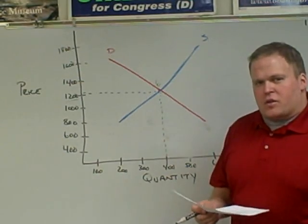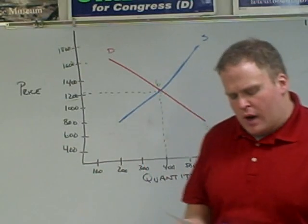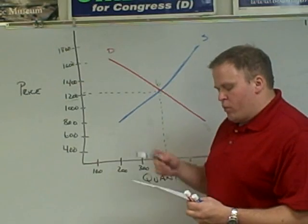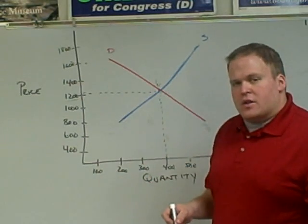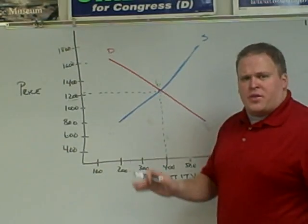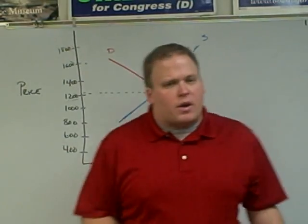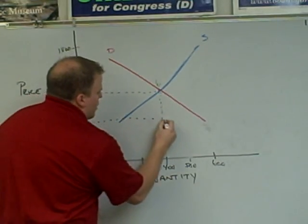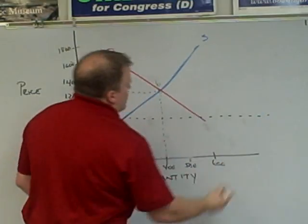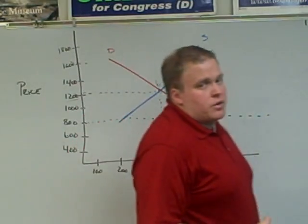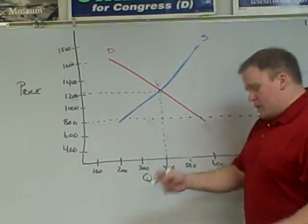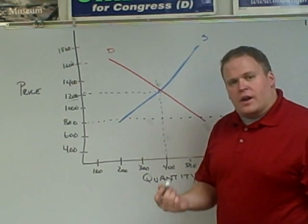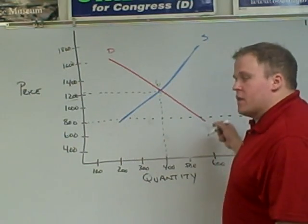Question four covers price ceilings and price floors — this is where it gets a little more complicated. The question says: suppose the government states televisions cannot be sold for more than $800 per television. Is this a price ceiling or a price floor? Before answering, the first thing we want to do is indicate that on our graph. We find $800 and draw a dashed line across the graph. Now let's look at what the question says — televisions cannot be sold for more than $800.